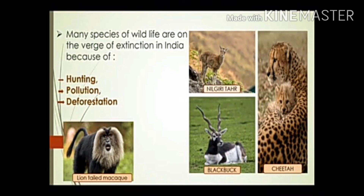Many species of wildlife are on the verge of extinction in India because of hunting, pollution, and deforestation. Some animals on the verge of extinction include the lion-tailed macaque, Nilgiri tahr, black buck — also called antelope — and cheetah.